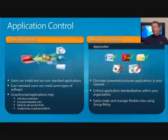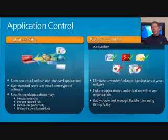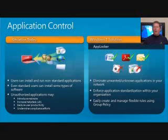We talked earlier about UAC and getting folks to run as a standard user. Unfortunately, running as a standard user is a great first step, but it's not enough. As a standard user, I can still download malware. If I'm the CEO of an organization and I download bad code, it doesn't have to run in the system context to access all the data and resources that I, as CEO, have access to. So in Windows 7, we've introduced AppLocker to help IT eliminate unknown and unwanted applications within their network.